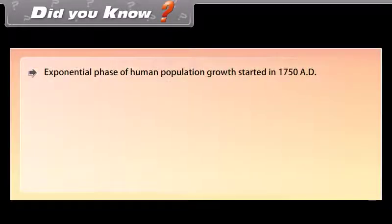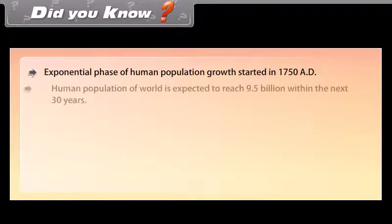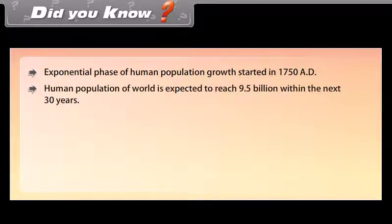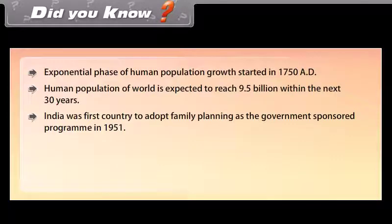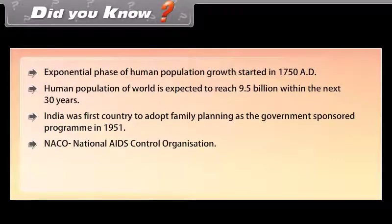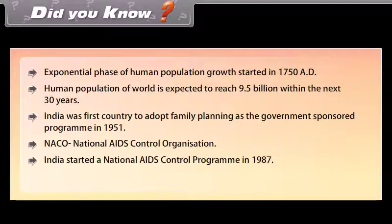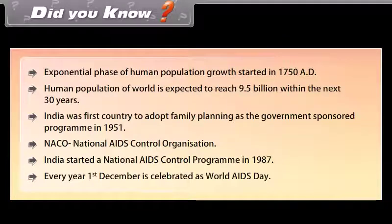Did you know: The exponential phase of human population growth started in 1750 AD. The human population of the world is expected to reach 9.5 billion within the next 30 years. India was the first country to adopt family planning as a government-sponsored program in 1951. NACO (National AIDS Control Organization) India started a National AIDS Control Program in 1987. Every year, 1st December is celebrated as World AIDS Day.